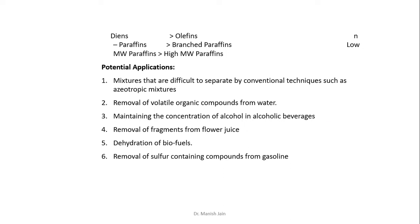You can maintain the concentration of alcohol by removing the excess amount from a beverage. Fourth is the removal of fragrances from flower juice — in the perfume industry, you can use pervaporation to remove the organic compounds present in flower juice responsible for fragrance. Fifth is the dehydration of biofuels — bioethanol or biodiesel as a fuel contains a small amount of water, which can be removed by pervaporation. Sixth is the removal of sulfur-containing aromatic compounds like thiophenes or benzothiophenes from gasoline, which are very difficult to remove by traditional desulfurization processes.